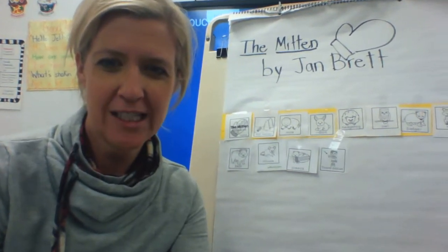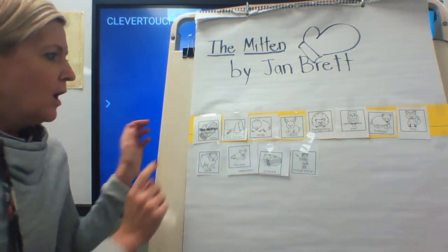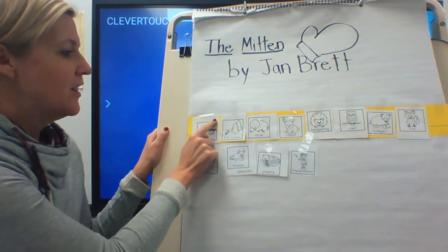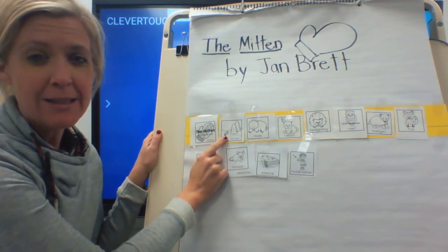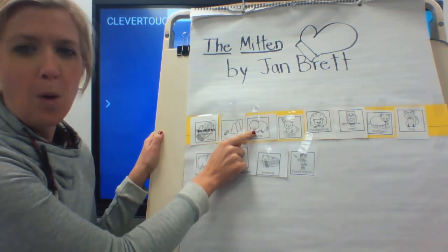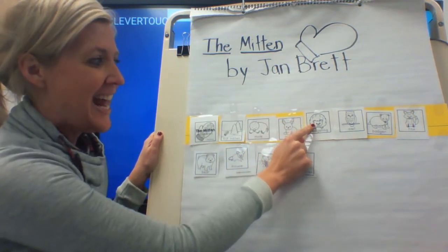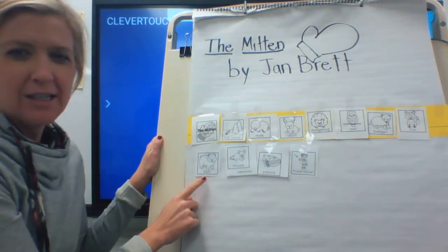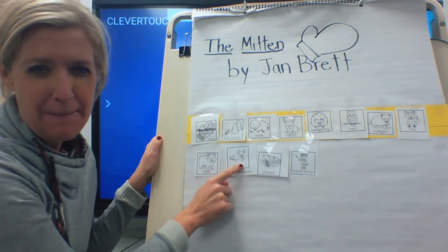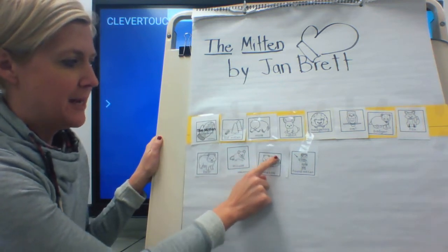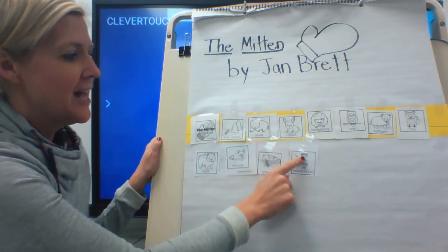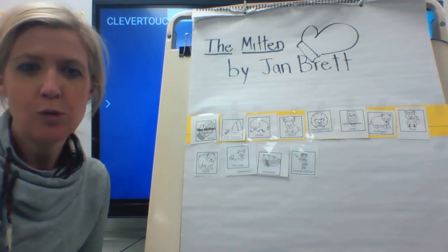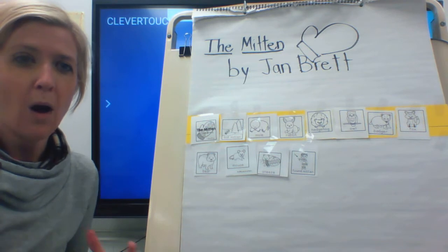Let's review one more time. This is the title picture: The Mitten, illustrated and adapted by Jan Brett. Then we start to retell the story: first Nikki loses his white mitten, and a mole finds it, then a rabbit, then a hedgehog, an owl, a badger, a fox, oh my goodness then the bear, and last the mouse. But the mouse makes the bear sneeze — achoo — and Nikki finds his lost mitten as he's heading for home. That is a retell, which means you put the story in order and retold what all the major events were.